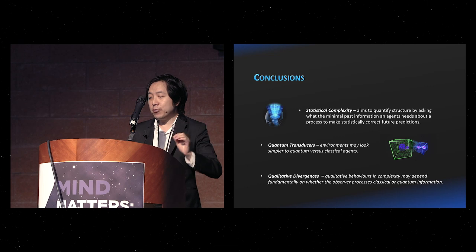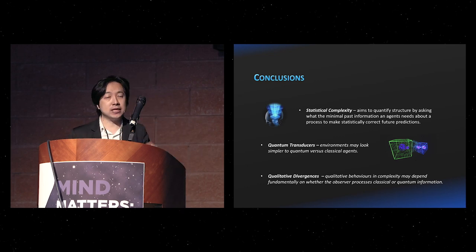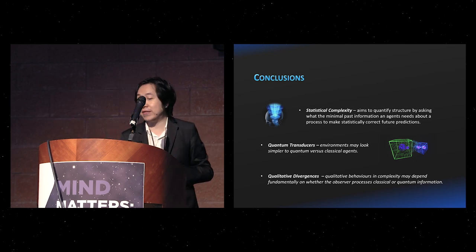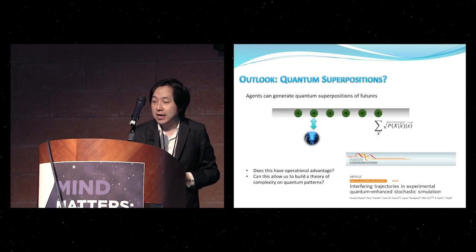Whenever the classical model's improvement doesn't violate the information processing inequality, we can do better quantum mechanically. Statistical complexity has a very nice operational interpretation in terms of an agent trying to understand the future based on information from the past. Just as with factoring in the computational sense, statistical complexity behaves very differently in the presence of quantum observers and quantum agents — and we are really just beginning to understand the qualitative and quantitative divergences.